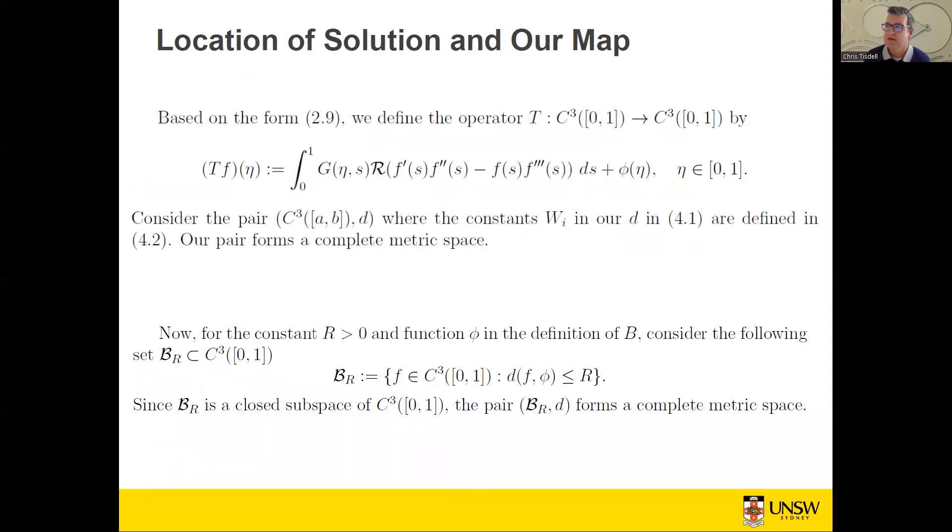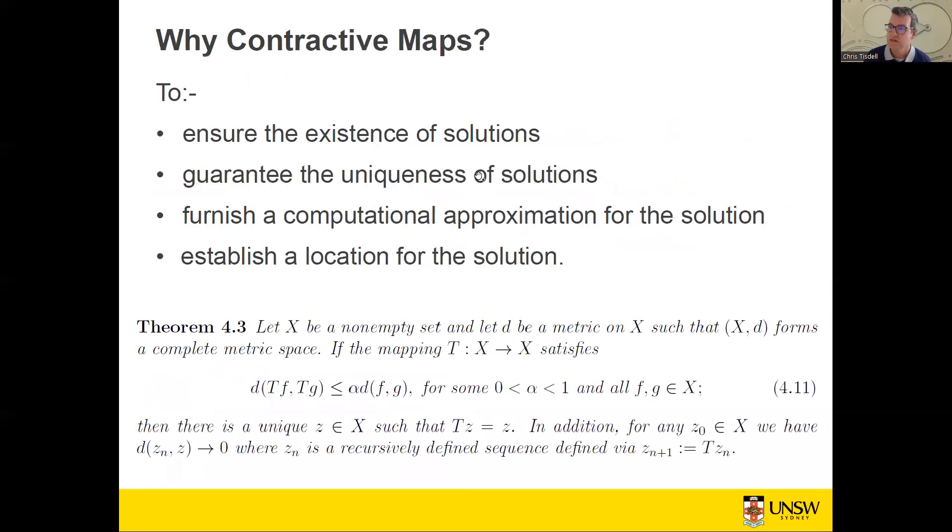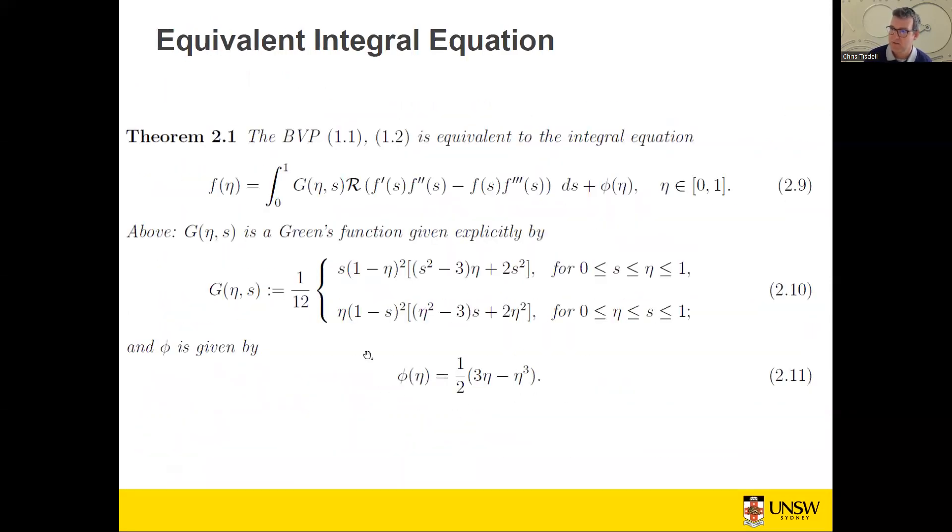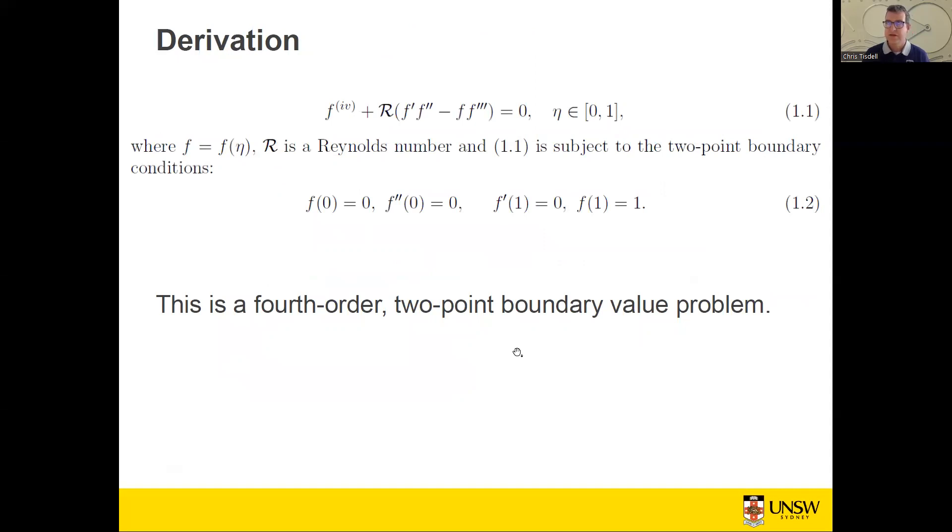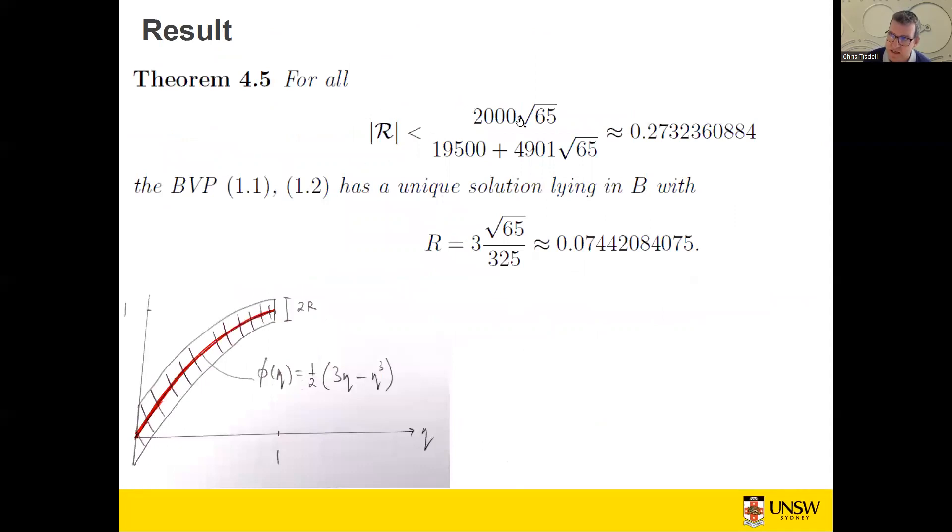This solution here, when calligraphic R equals 0, the Reynolds number equals 0. So the conclusion here supports what we would hope for, what we would expect. What it says is that as long as the Reynolds number isn't too large, then the problem has a solution, and we have some idea of where the solution lies, and it doesn't deviate too much from this homogeneous solution.